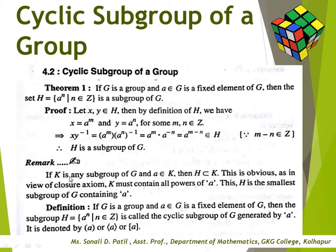Remark: if K is any subgroup of G and A ∈ K, then H ⊆ K. This is obvious since by the closure axiom, K must contain all powers of A. Thus H is the smallest subgroup of G containing A. Definition of cyclic subgroup: if G is a group and A ∈ G is a fixed element, then H = {Aⁿ : n ∈ Z} is called the cyclic subgroup of G generated by A, denoted ⟨A⟩.